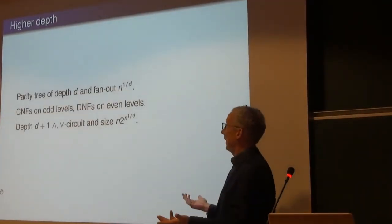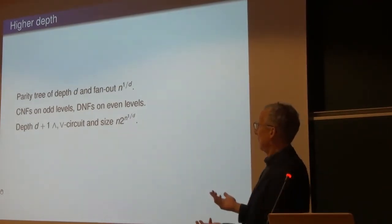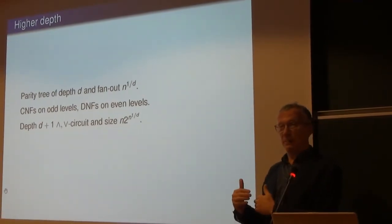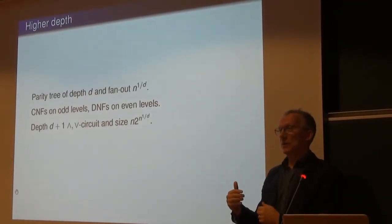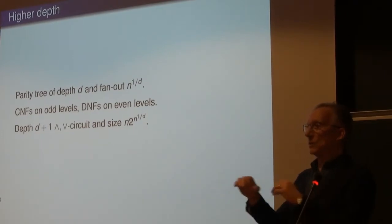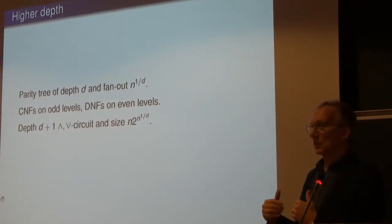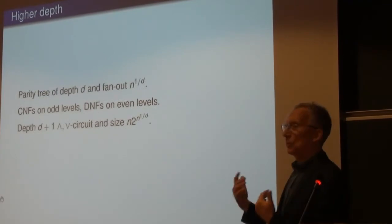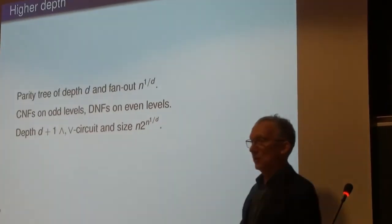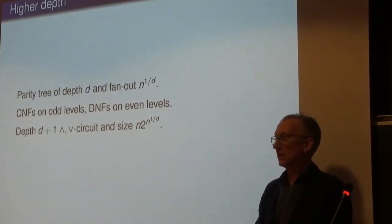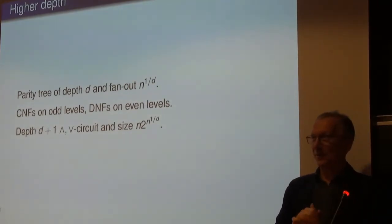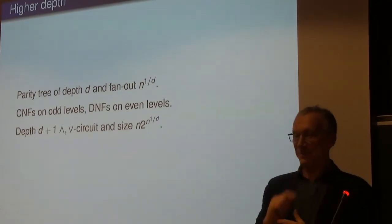For general depth D, you take a parity tree of depth D with fanin N^(1/D), and replace each parity gate by either an AND-of-ORs or OR-of-ANDs in a clever alternating way so that adjacent same-type levels collapse. Instead of getting depth 2D you get depth D+1, and the size is exponential in N^(1/D).